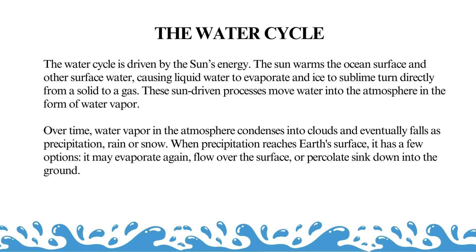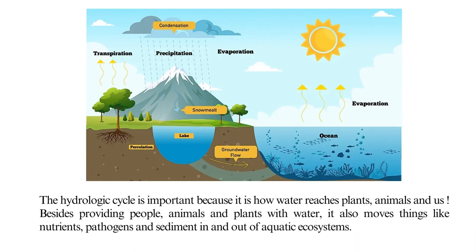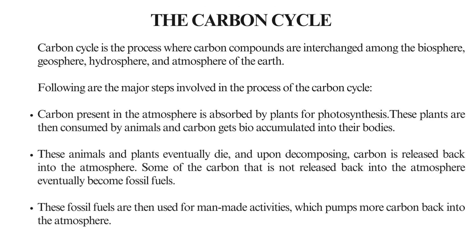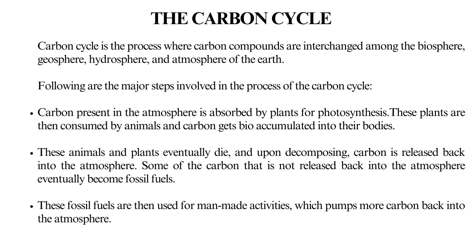When precipitation reaches earth's surface it may evaporate again, flow over the surface, or percolate and sink down into the ground. The hydrologic cycle is important because it is how water reaches plants, animals, and us. Besides providing people, animals, and plants with water, it also moves things like nutrients, pathogens, and sediment in and out of aquatic ecosystems.